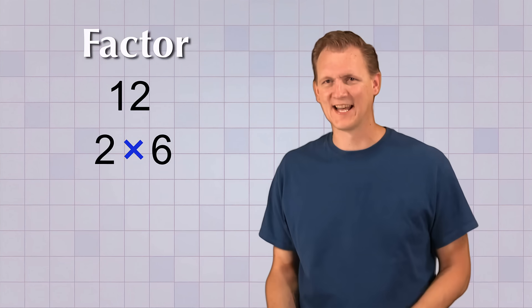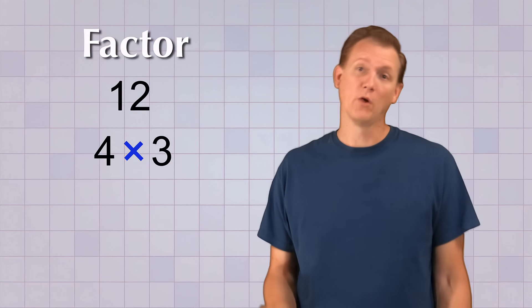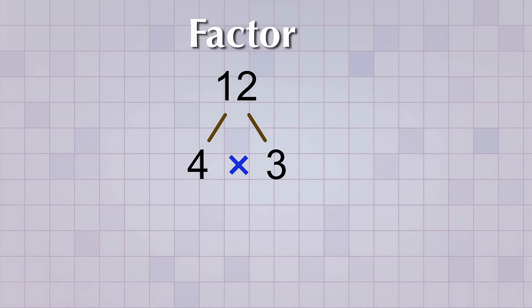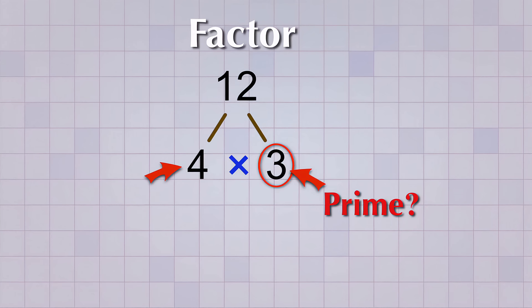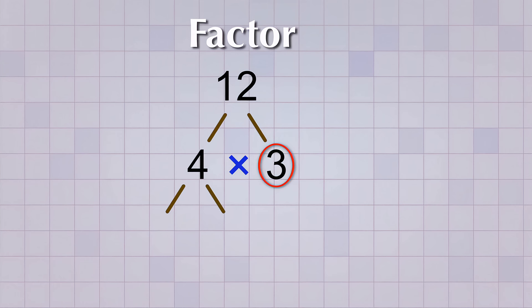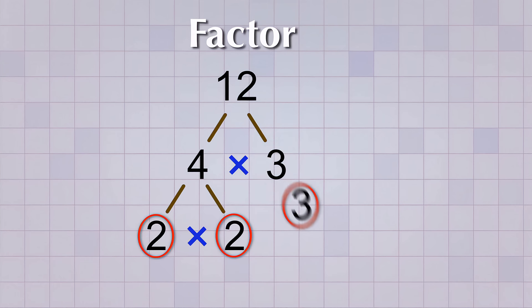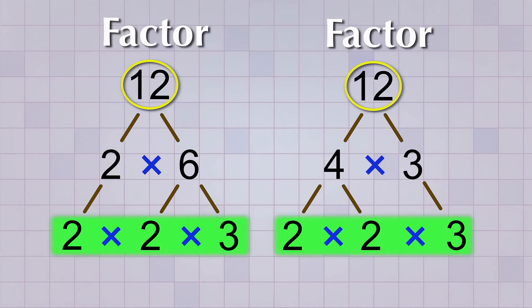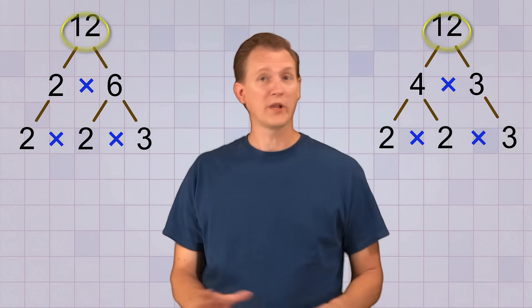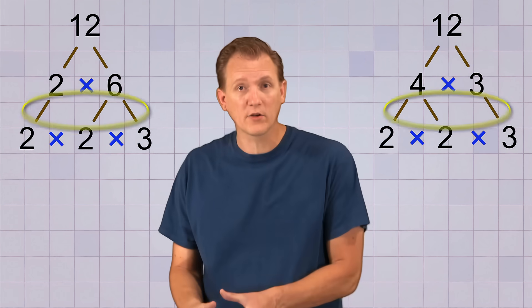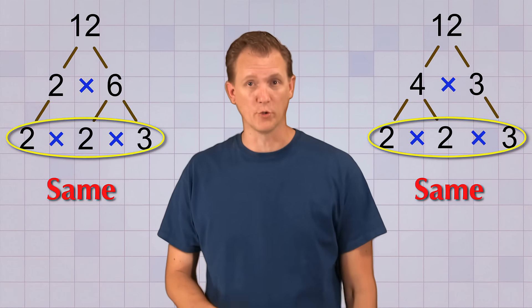Now I know what some of you are thinking — you wanted to factor 12 into 4 times 3 instead of 2 times 6. Well, okay then, let's try it that way. This time we'll start by factoring 12 into 4 times 3. We need to keep factoring until all factors are prime. 3 is prime, but 4 is not — 4 can be factored into 2 times 2. And if we bring down that 3 from the first step, we get the exact same prime factors. No matter which way you start factoring, as long as you factor all the way down to prime numbers, you'll always end up with the same group of prime factors.